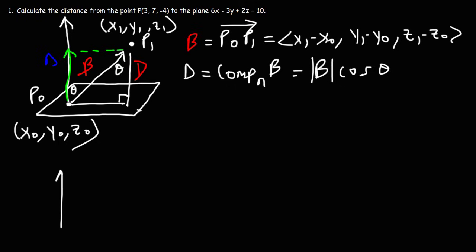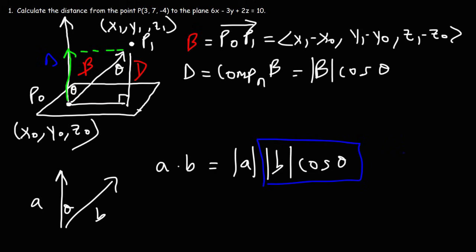Now, let's say we have two vectors, vector A and vector B, and we know the angle between them. The dot product of A and B is equal to the product of the magnitudes of A and B times cosine theta. So notice that we have this portion of the equation. To isolate that part, we need to divide both sides by the absolute value of A. So we can say that B cosine theta is the dot product of A and B divided by the magnitude of A.